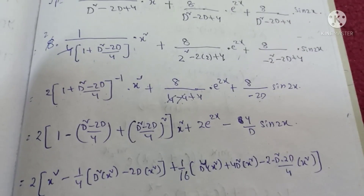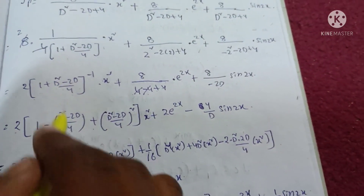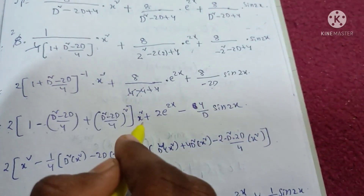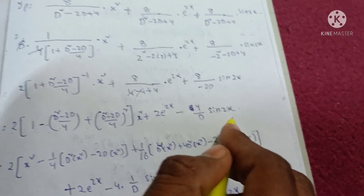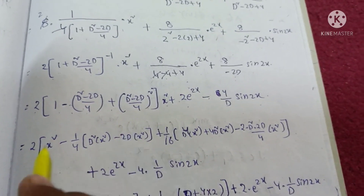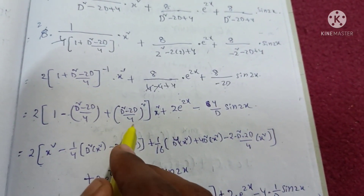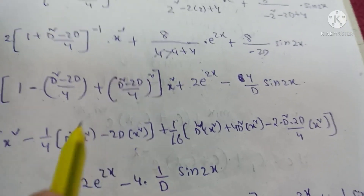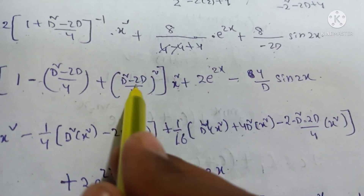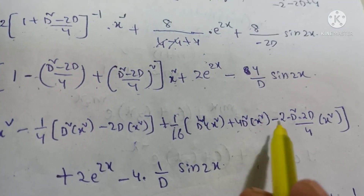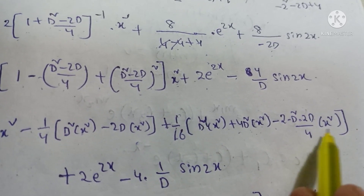For the x squared term: 2 into (1 plus (d squared minus 2d)/4) whole inverse into x squared. Expanding using binomial inverse formula: 1 minus x plus x squared gives 1 minus (d squared minus 2d)/4 plus ((d squared minus 2d)/4) squared, all into x squared. Computing: d squared of x squared is 2, d of x squared is 2x, and d power 4 of x squared is 0.